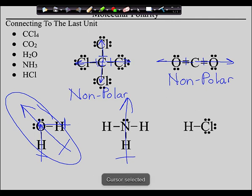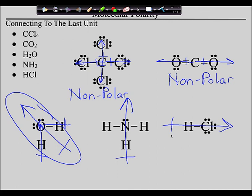The last one — HCl. Which is more electronegative, the hydrogen or the chlorine? Chlorine is more electronegative. There are no other bonds to worry about — the whole molecule is polar in that direction. If it's non-polar, write non-polar. If it's polar, draw the arrow.